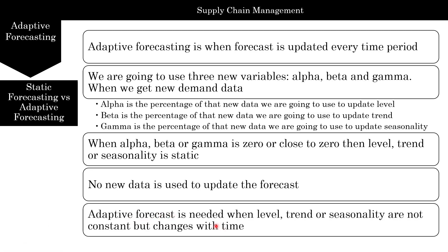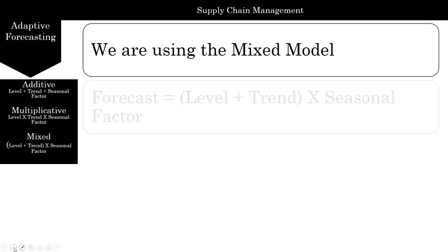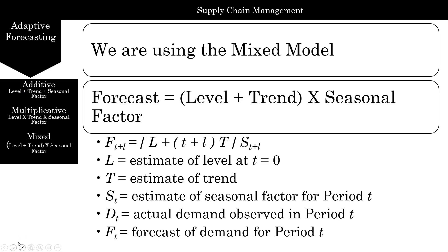Adaptive forecasting is needed when level, trend, and seasonality are not constant but change over time. In this lecture and chapter, we are focusing on mixed models, not additive and multiplicative. The difference is: mixed models calculate level plus trend, then multiply the whole thing times seasonality. Multiplicative multiplies all three; additive adds all three. We will use the mixed model, where F is the forecast, L is level, T is trend, S is seasonality, and small t is the time period.